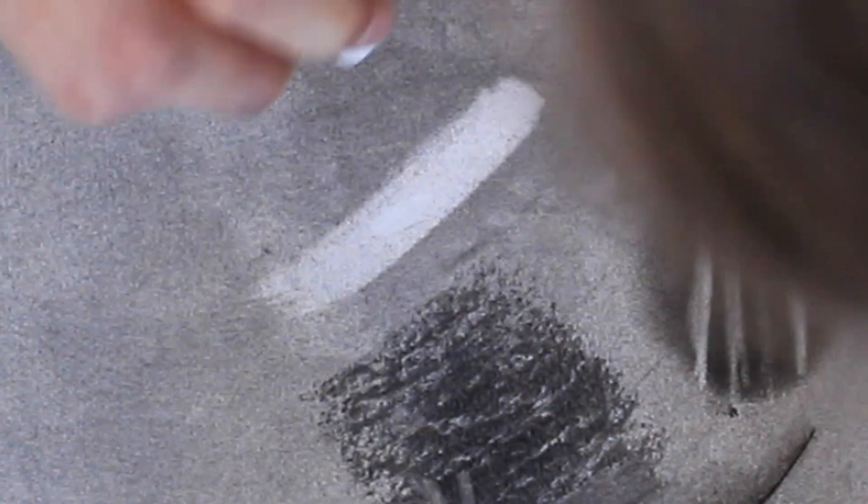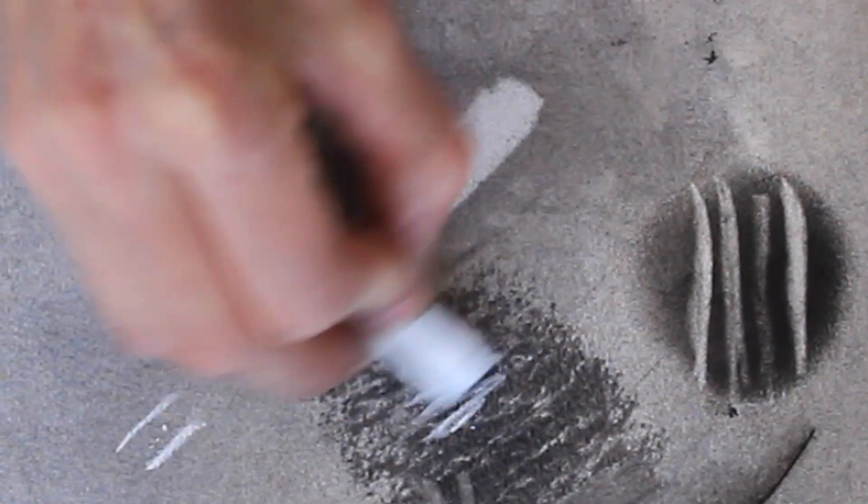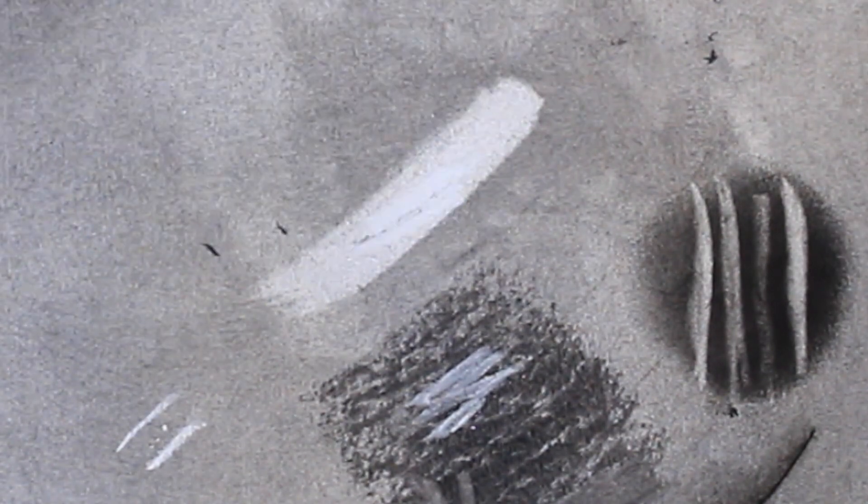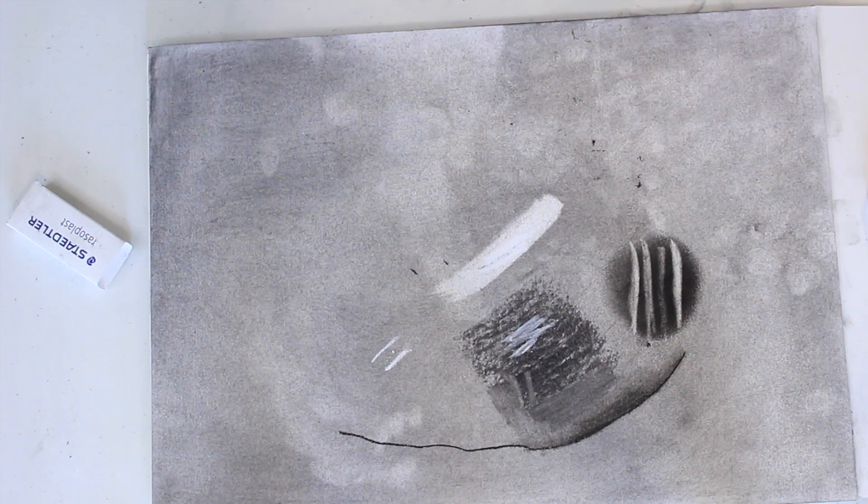But you don't want to use white pastels on top of charcoal because it will just make it grey and you get this kind of muddy effect. So those are your basic blending starting techniques, and after that I can show you how to draw something with them.